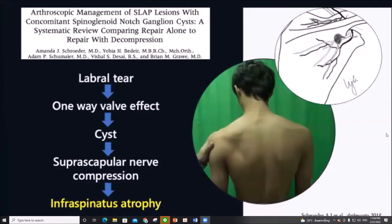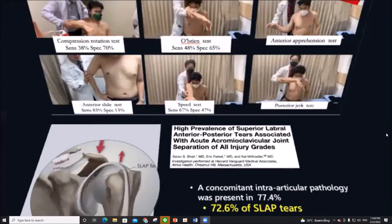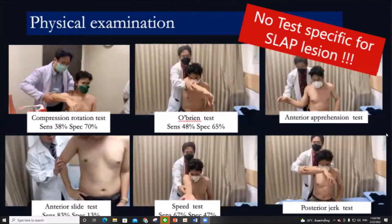Due to the labrum tear, cysts may form and cause suprascapular nerve compression, and patients will present with infraspinatus atrophy. In AC joint separation, there is a high prevalence of intraarticular pathology, especially SLAP tears. There are many tests for SLAP lesions, but no test is specific; we recommend using a combination of tests to improve accuracy.